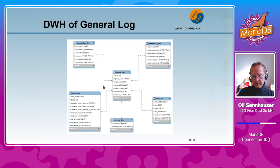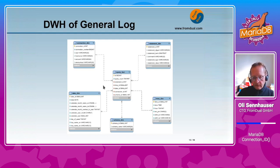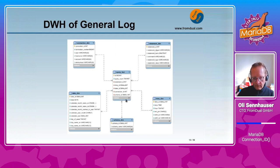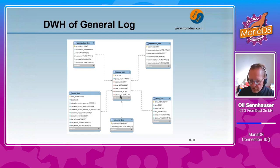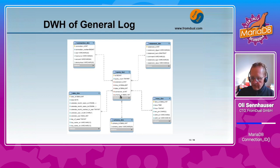What we also did is design a little data warehouse for evaluating all the queries in the general query log. Here is the star model of this data warehouse: in the middle are the queries themselves, the statements belonging to the queries, at what time the query was executed, date and time, and to which connection and schema it belongs. If we feed the general query log into this data warehouse structure, we can do a lot of queries and find out what query interfered with what other query to investigate what went wrong on your system.